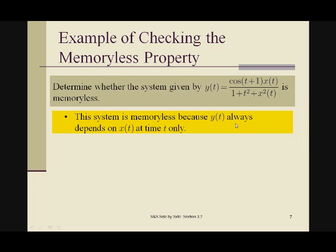Now when you looked at the problem, maybe you thought the system was not memoryless because of the cosine(t+1). That's not time t after all, it's time t+1.